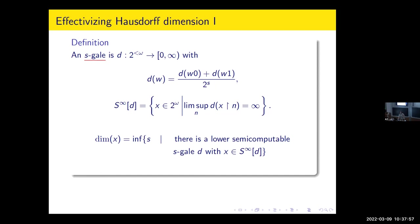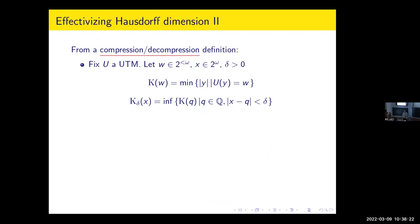Our effectivizations are mostly point-wise, so you define them for points, and then for sets you take the supremum over all elements in the set. The second way we effectivize comes from information theory, from Kolmogorov complexity. The definition of Kolmogorov complexity of a point X at precision delta is just the Kolmogorov complexity of a rational point in the delta-neighborhood of X — specifically, the smallest Kolmogorov complexity of such a point.